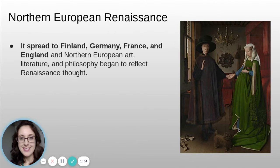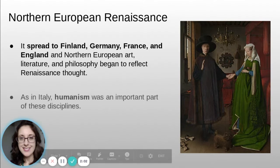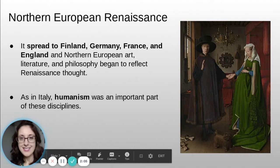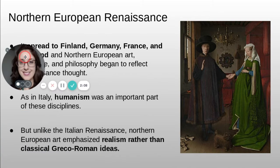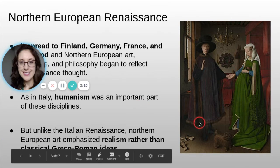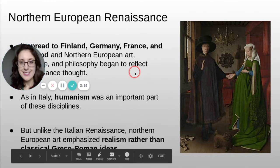The Northern European Renaissance spread to Finland, Germany, France, and England. Northern European art, literature, and philosophy began to reflect Renaissance thought. As in Italy, humanism was an important part of these disciplines. But unlike the Italian Renaissance, Northern European art emphasized realism rather than Greco-Roman ideas.